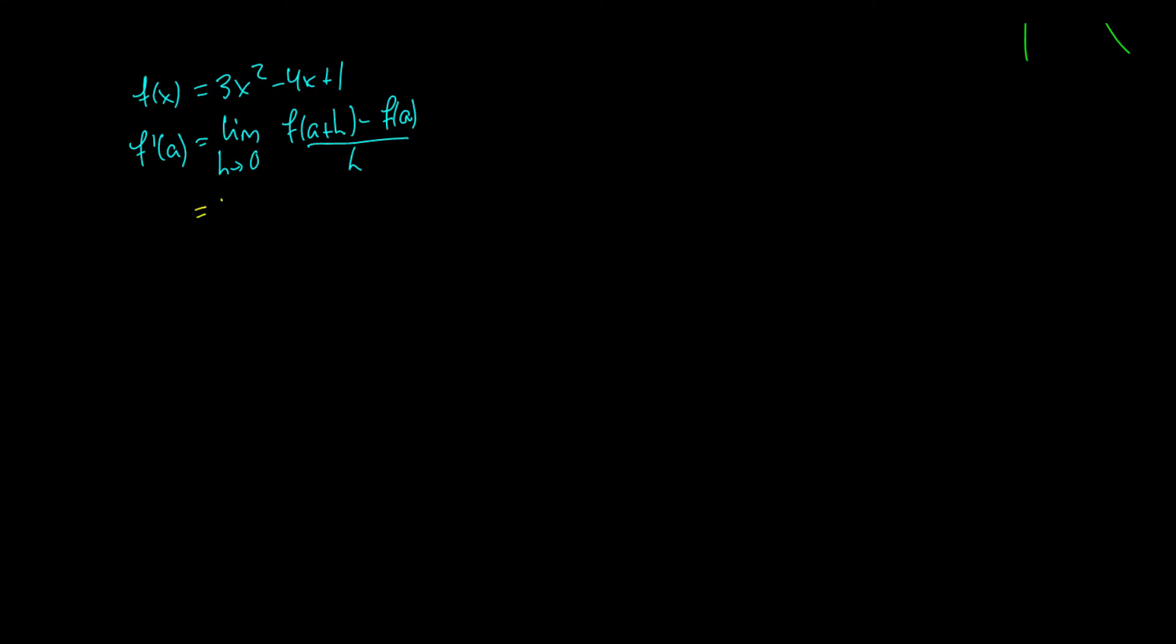Okay, let's plug some stuff in here. The limit as h approaches 0 of f of a plus h is going to be 3 times a plus h squared minus 4 times a plus h plus 1 minus f of a. So minus 3a squared plus 4a minus 1. This is a huge, huge top to this equation, like just ridiculous, all over h. So you can see why your algebra skills need to be a little bit handy here. Okay, so we're going to expand a plus h squared out. So we're going to get a squared plus 2ah plus h squared minus 4a minus 4h. We're going to simplify a little bit. The plus 1 minus 1 cancel. So we'll get plus 4a minus 3a squared all over h.